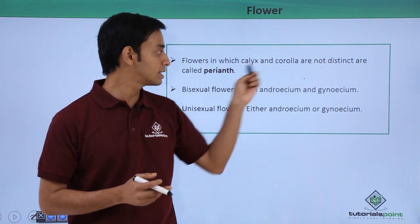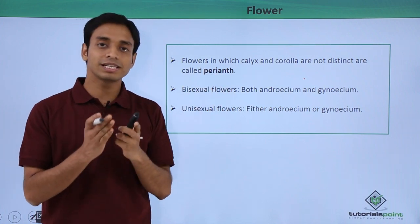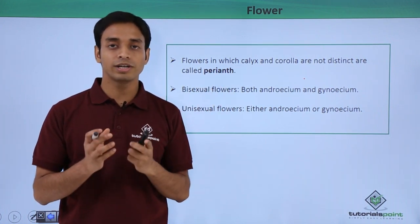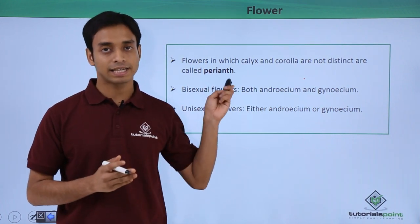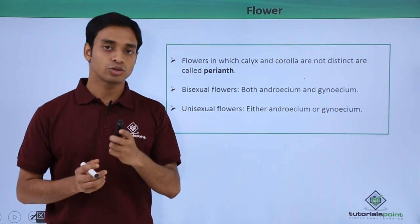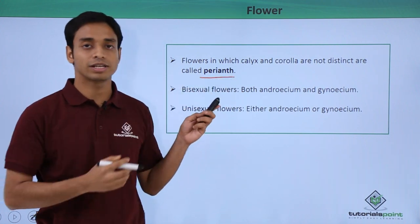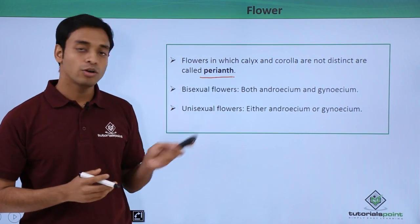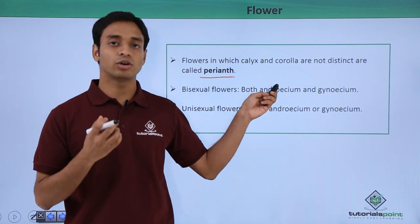In a typical flower where the calyx and corolla are not distinct — where the sepals and petals are found in a fused form and we cannot properly distinguish between them — this form is known as the perianth.